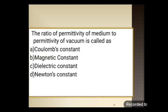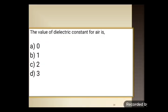Next question: the ratio of permittivity of medium to the permittivity of vacuum is called as — option A: Coulomb's constant, option B: magnetic constant, option C: dielectric constant, option D: Newton's constant. The correct answer is dielectric constant. The value of dielectric constant for air is 1.